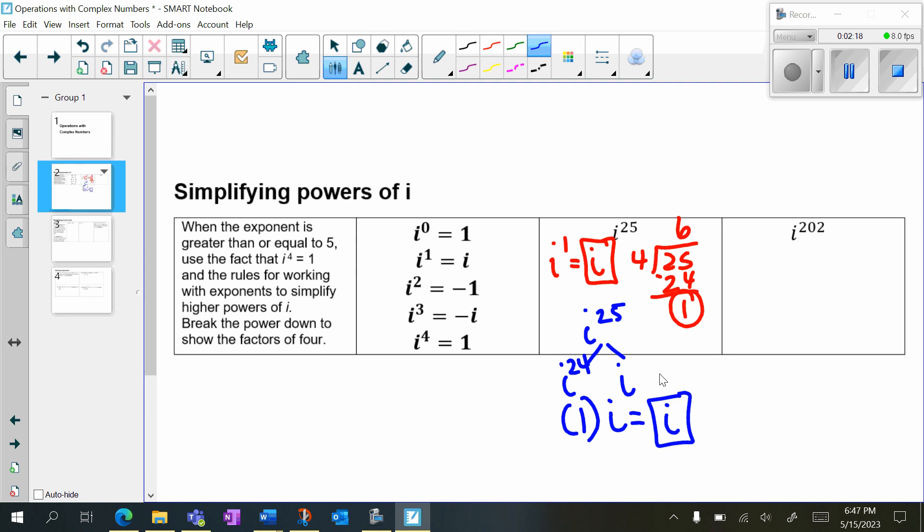Why don't you try i to the 202 power? Pause the video now and try. Well, one way I can look at this is, how many times does 4 go into 202? Well, it goes in 50 times. So 50 times 4 is 200. Subtract and you're left with 2 as my remainder. So that means I have i squared, which is negative 1.